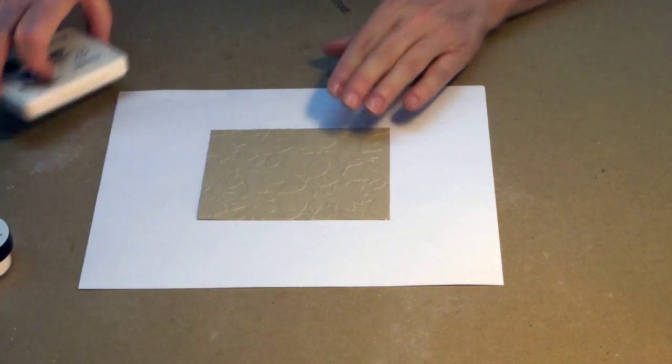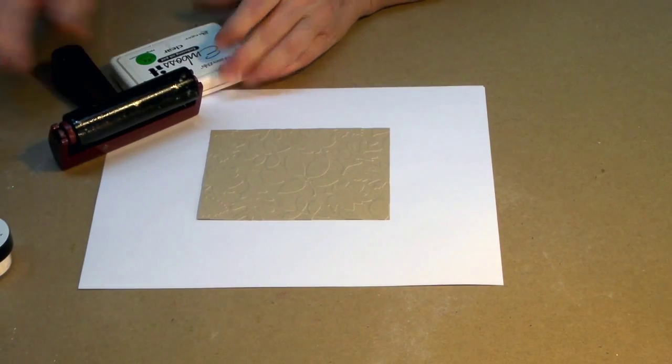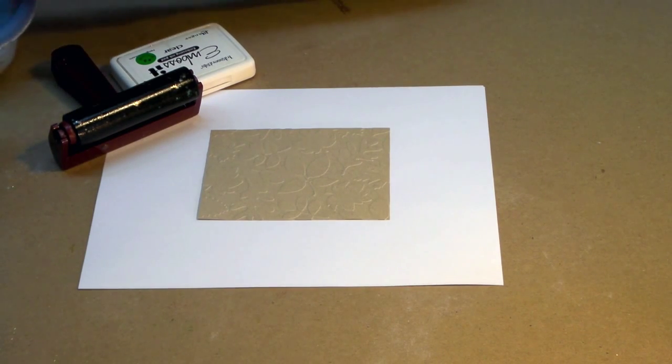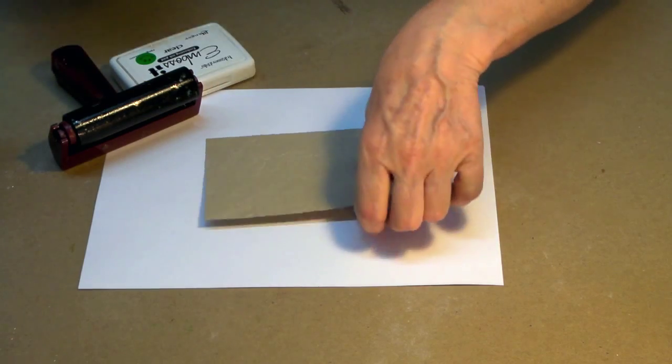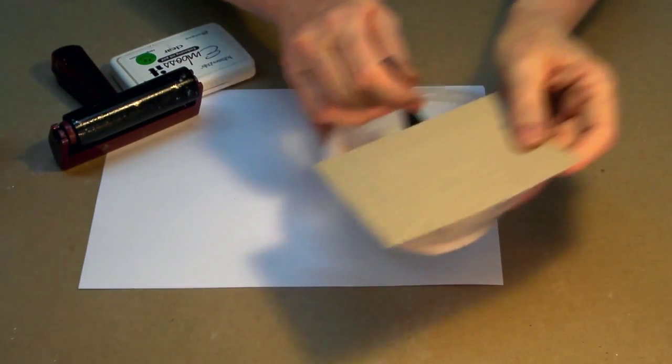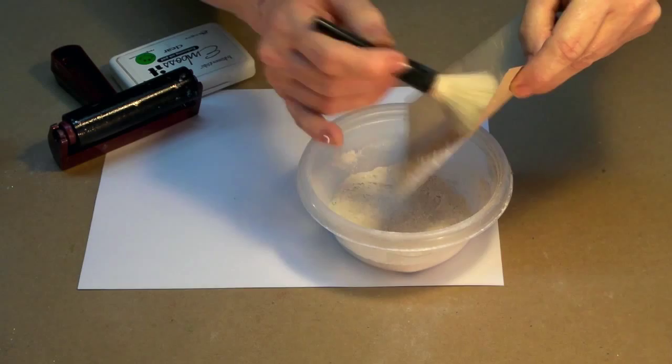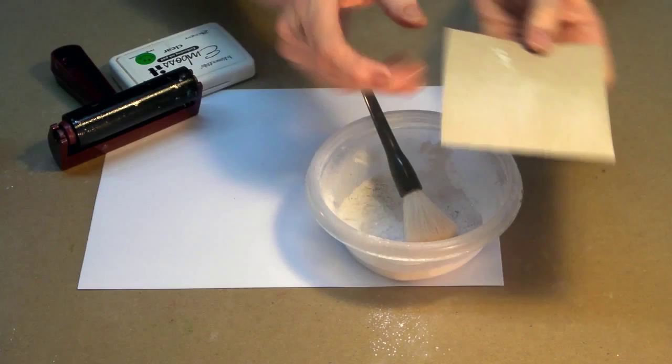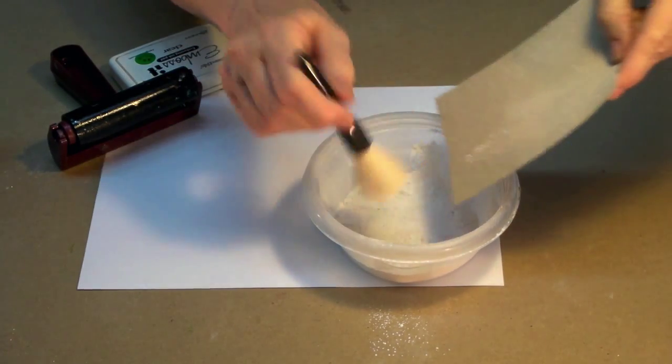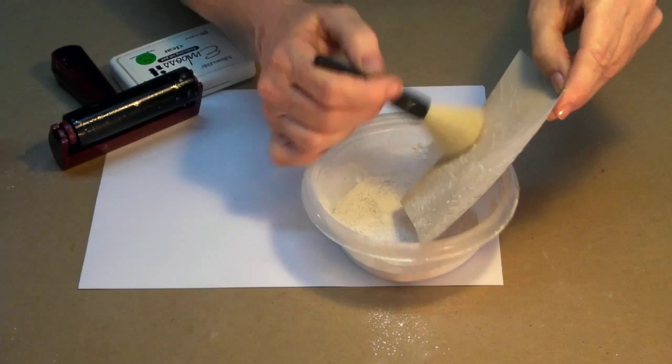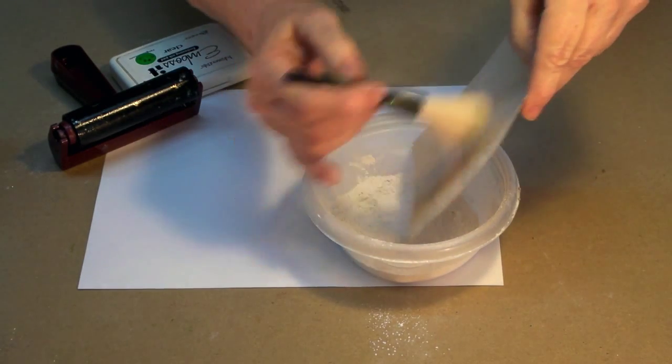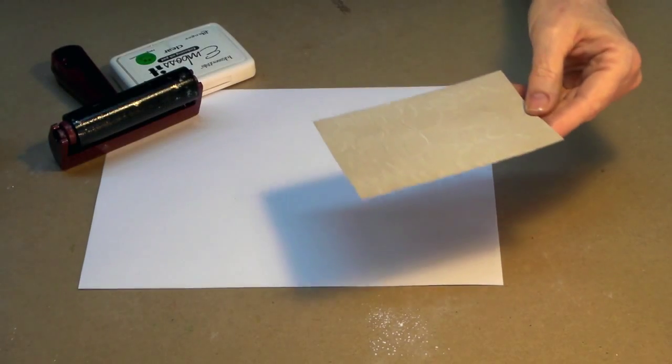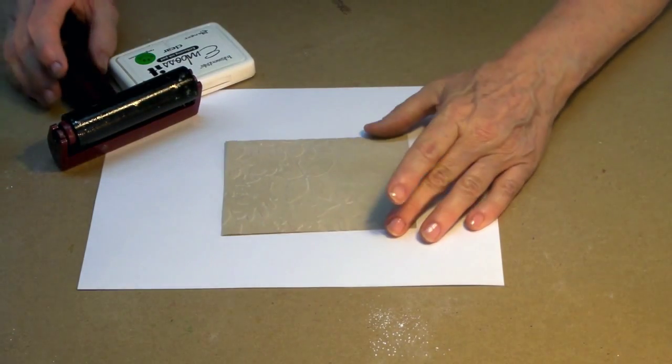To get our ink onto our piece, we're going to use our brayer. First thing I'm going to do is prep my paper with anti-static powder. I'm going to put my anti-static powder all over my piece, brush away the excess. We do this so that we'll get ink on the top portion of the embossing, but all the edges and the ridges down underneath won't get quite as much. We might have a little bit down in there, but it won't be anything to speak of.